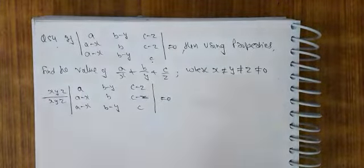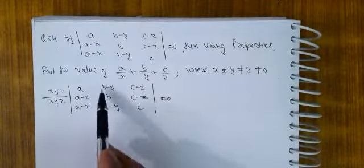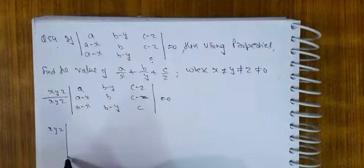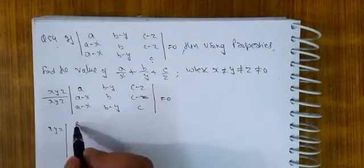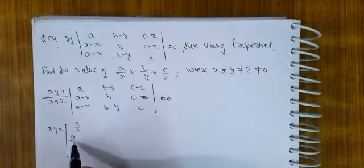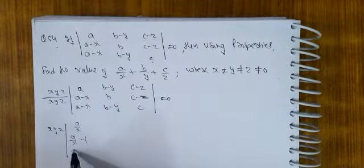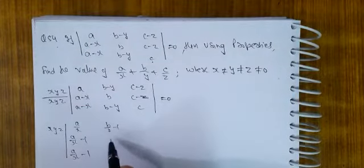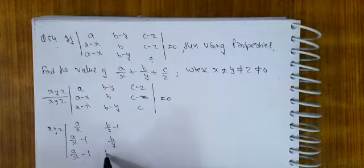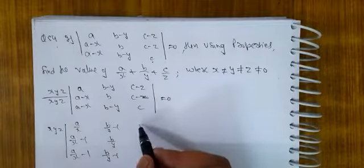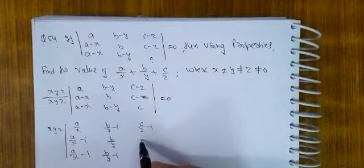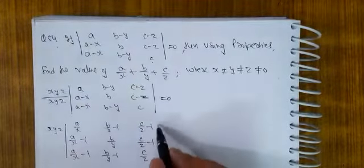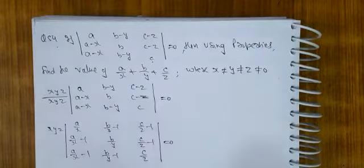अब हम करते हैं, X से इसमें divide कराते हैं, Y से इसमें और Z से इसमें। तो यह XYZ ऐसी रहेगा। यह जाएगा A upon X, इधर A upon X minus 1, इधर भी A upon X minus 1, B upon Y minus 1, B upon Y, B upon Y minus 1, C upon Z minus 1, C upon Z minus 1, and C upon Z, is equal to 0.